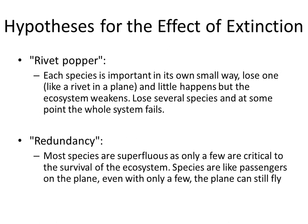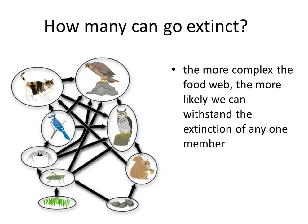The other hypothesis is redundancy: most species are superfluous, as only a few are critical to the survival of an ecosystem. Species are like passengers on the plane — even with only a few, the plane can still fly. The more complex the food web, the more likely we can withstand the extinction of any one member.